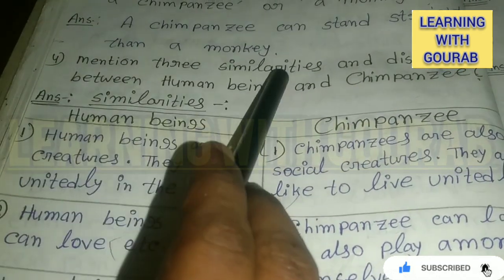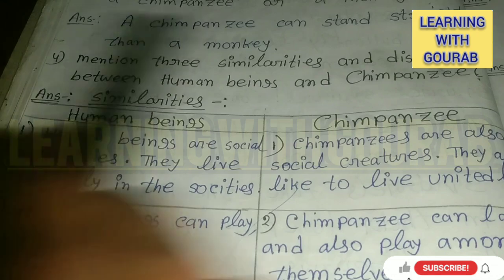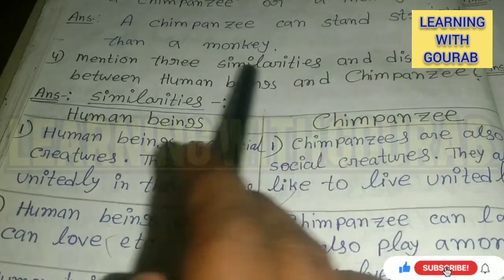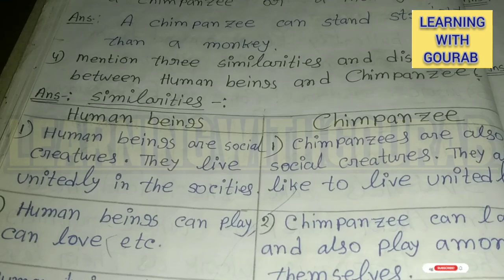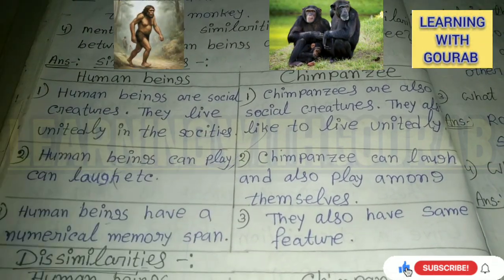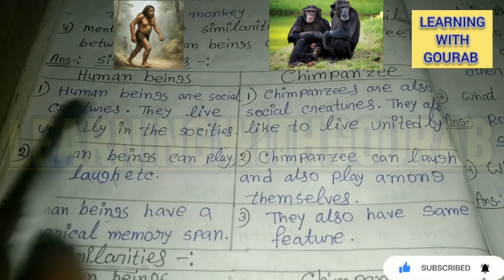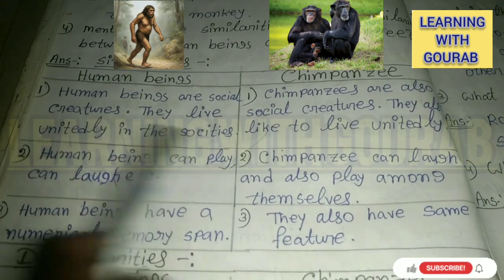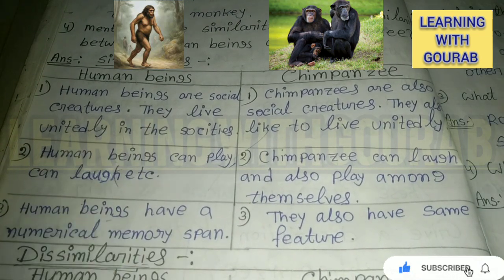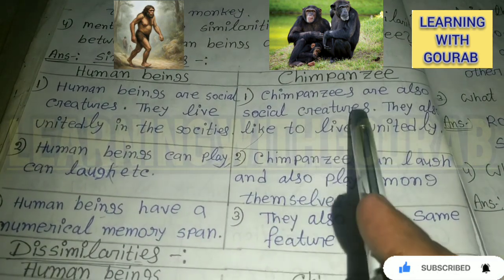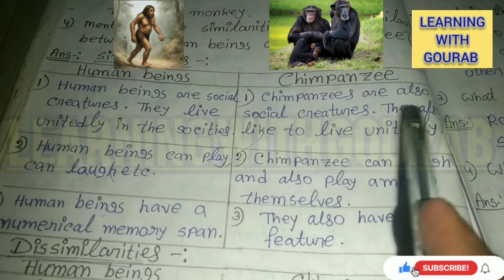The next question: mention three similarities and dissimilarities between human beings and chimpanzees. Similarity one: human beings are social creatures — they live unitedly in societies. Chimpanzees also live in groups similarly.